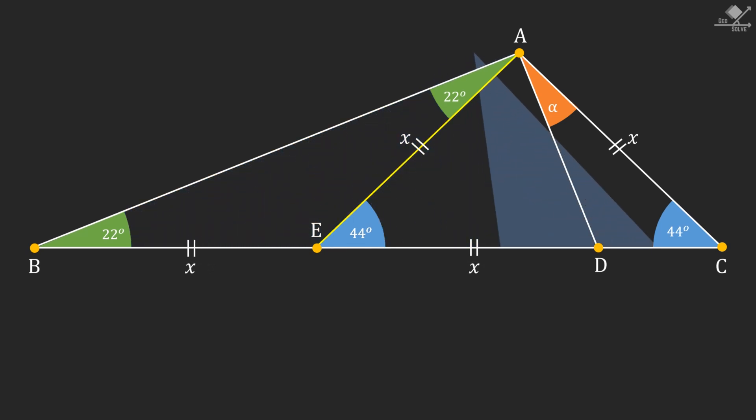Let's focus on this triangle. Using exterior angle theorem, this angle will be alpha plus 44 degrees.